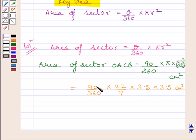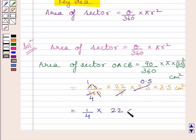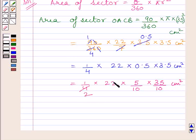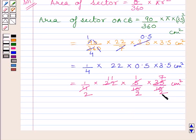Simplifying this expression, we get 90 upon 4 multiplied by 22 multiplied by 0.5 multiplied by 3.5 cm squared. This can be further written as 1 upon 4 multiplied by 22 multiplied by 5 upon 10 multiplied by 35 upon 10 cm squared. After simplification, we get 77 upon 8 cm squared as the area of sector OACB.